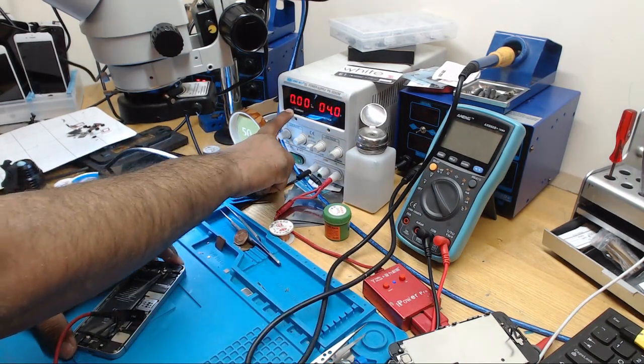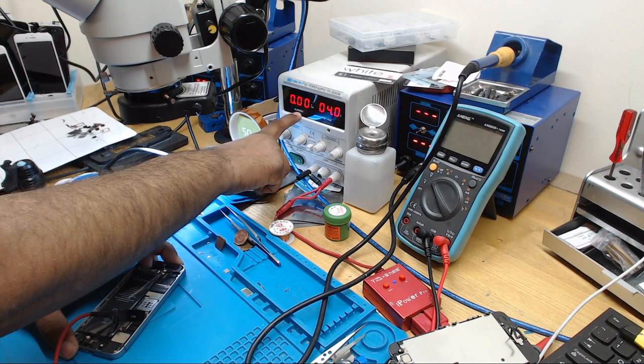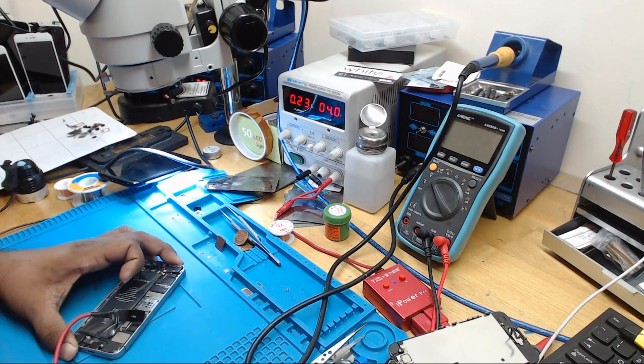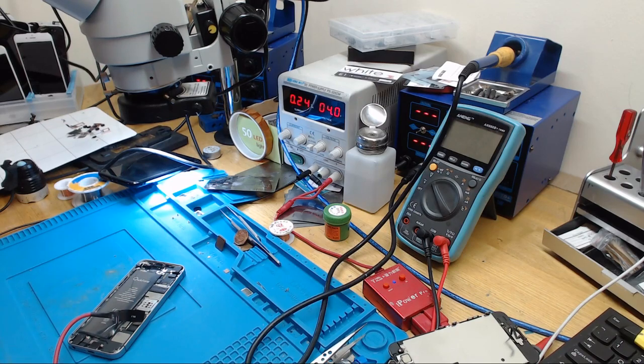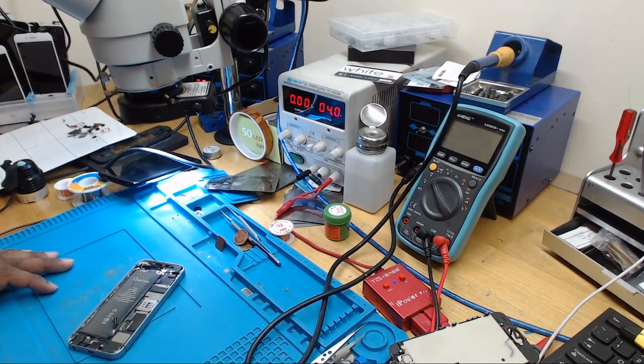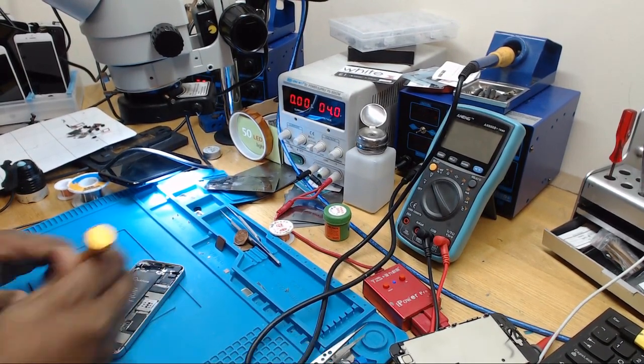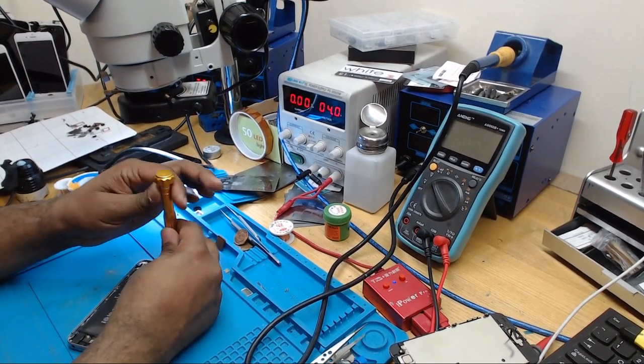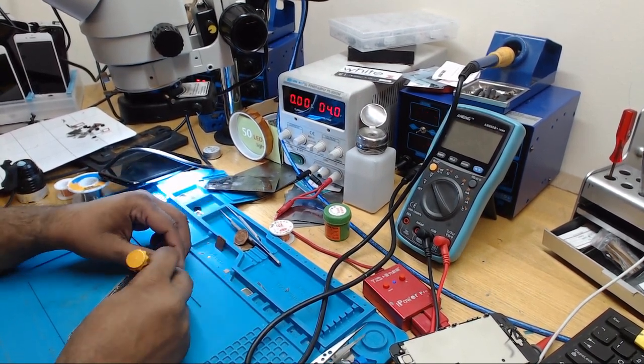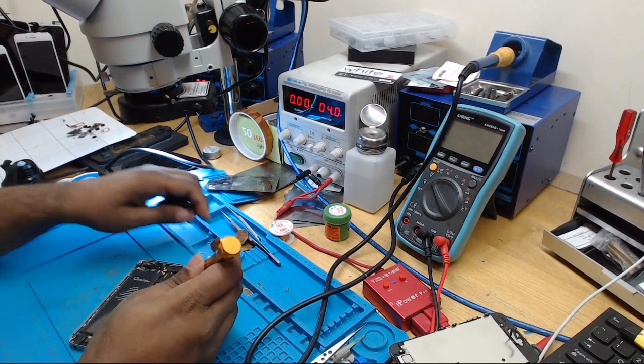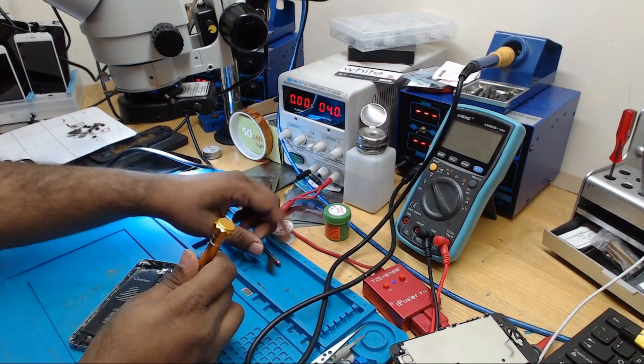Let me show you again. It's jumping to like 0.19, so that's 190, then 0.21, that means 210 milliamps and so on. So that is a tri-star failure. That's how we recognize if it's a tri-star problem or any other problem. I'm going to replace the tri-star and fix this problem.